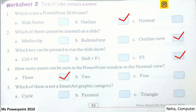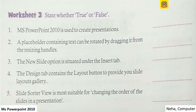Now moving to Worksheet 3 - state whether true or false. MS PowerPoint 2010 is used to create presentation. True. A placeholder containing text can be rotated by dragging it from the resizing handles. False - placeholder can be rotated by rotation handles. Third, the new slide option is situated under the insert tab. False - it is situated under the home tab.